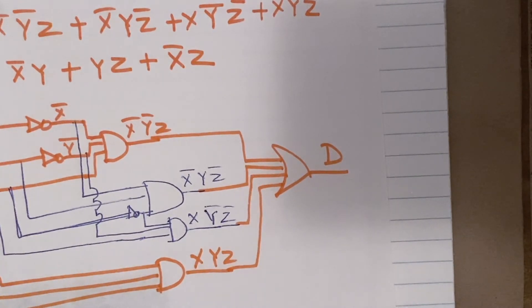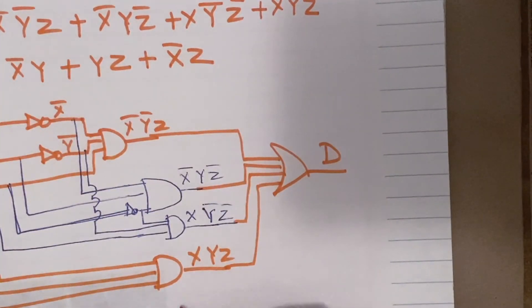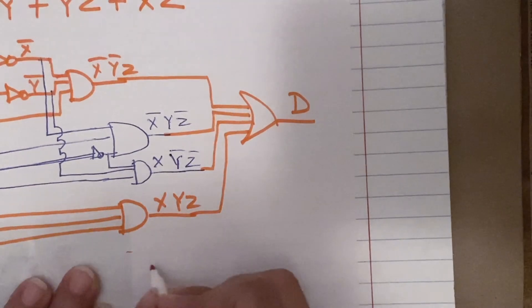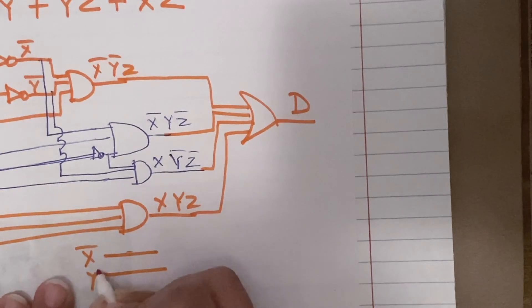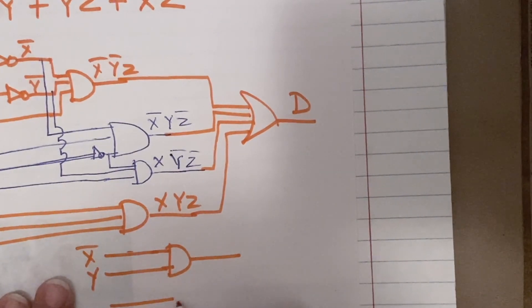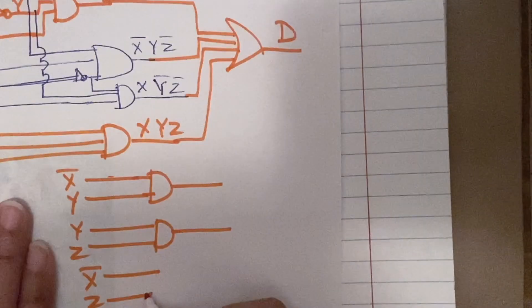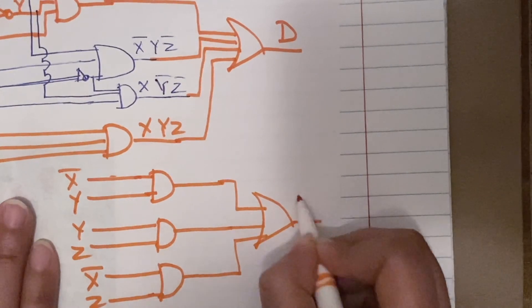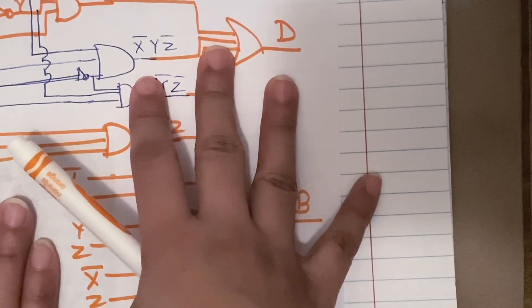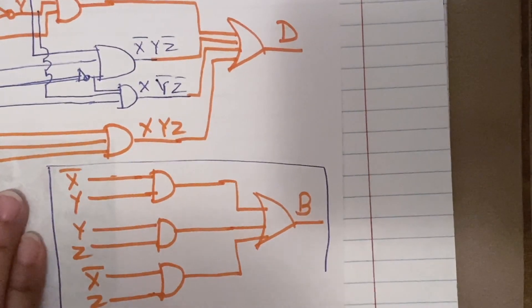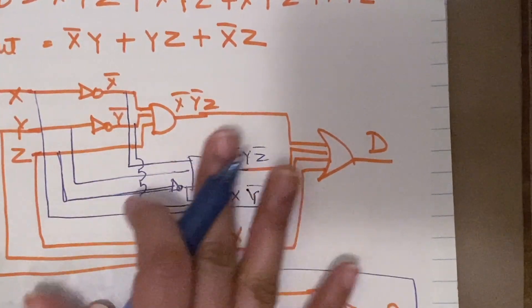Similarly for the borrow out B_out, we implement the three terms: x̄·y, y·z, and x̄·z using AND gates, then OR all of them together to get B_out. This completes the circuit — the upper portion is the difference circuit and the lower portion is the borrow out circuit. If the video was helpful, please share with your friends and subscribe to the channel. Thanks for watching.